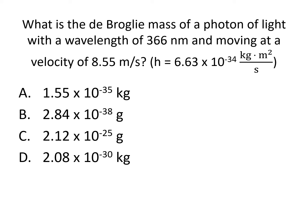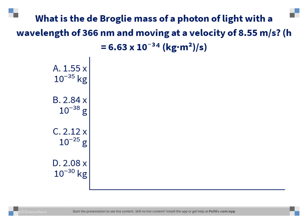Is the answer A, 1.55 times 10 to the minus 35 kilograms, B, 2.84 times 10 to the minus 38 grams, C, 2.12 times 10 to the minus 25 grams, or D, 2.08 times 10 to the minus 30 kilograms? The correct answer is C, 2.12 times 10 to the minus 25 grams.